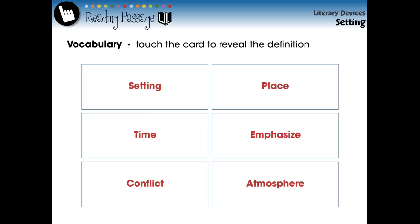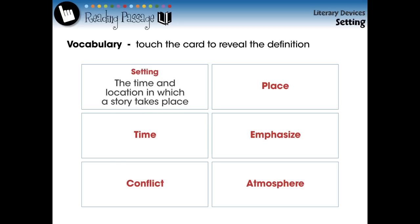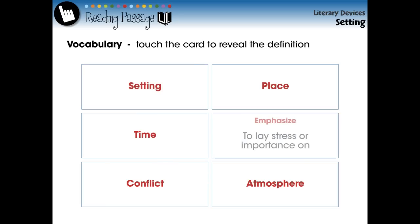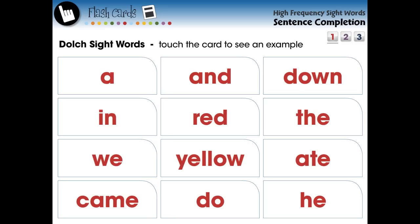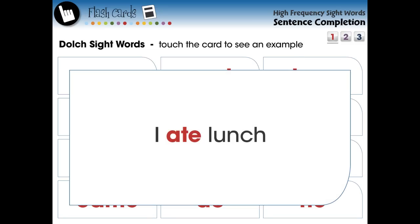The Reading Passage section begins with vocabulary flashcards. We identify up to six words that each student should comprehend prior to reading the following reading passage. Rather than going online or using the dictionary, students receive a simplified definition by simply touching the card. For the primary grades in Language Arts, we include a variety of vocabulary flashcards in each grade level.